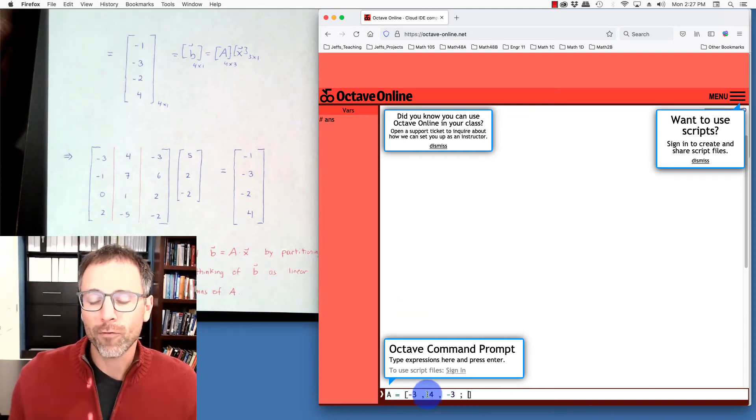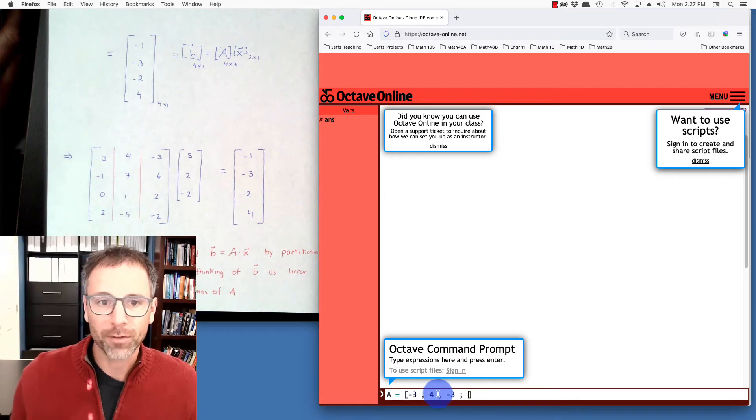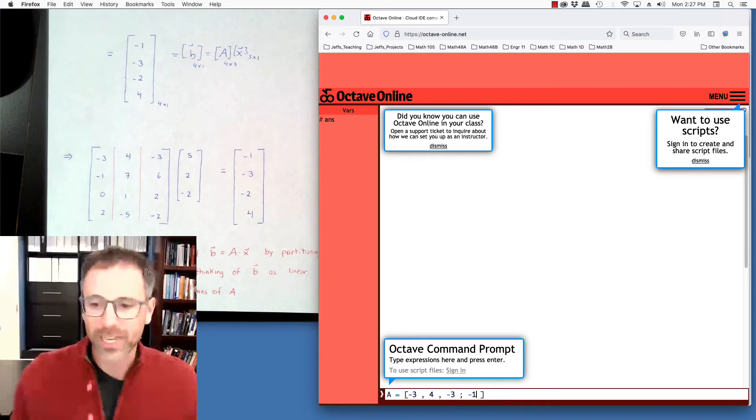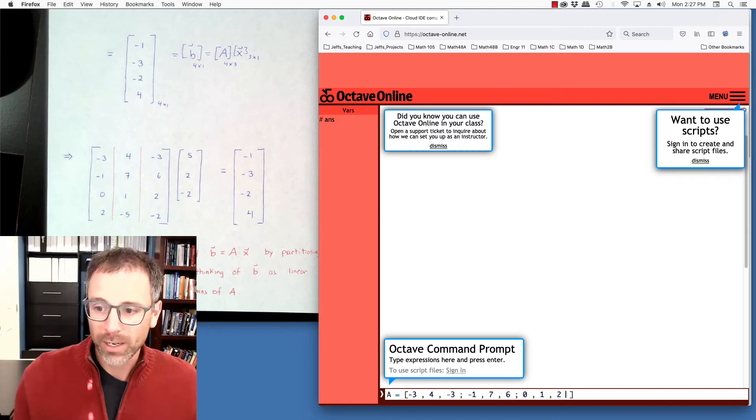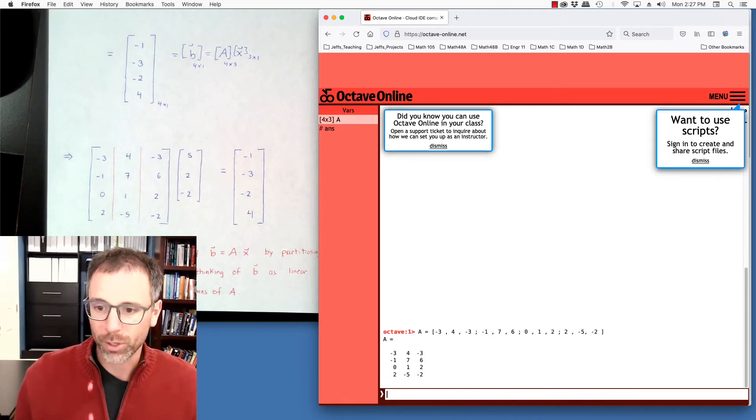So this tells Octave the first row is negative 3. Then the next entry is 4. Then the next entry is negative 3. Go down. So little semicolon means go down to the next row. So first thing I do is negative 1 comma 7 comma 6. Go down to the next row, which is semicolon 0 comma 1 comma 2 semicolon. And then also 2 comma negative 5 comma negative 2. And let's go ahead and push enter.